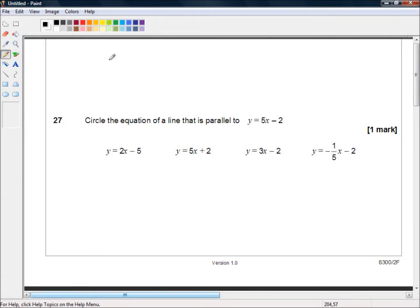Hello and welcome to the AQA GCSE 8300 series. This is the second paper in the foundation tier and we're picking up in question 27. Circle the equation of a line that is parallel to y equals 5x minus 2.